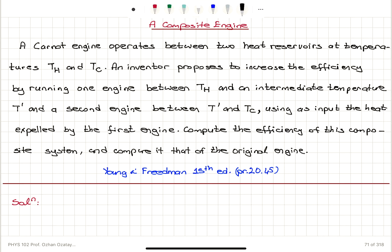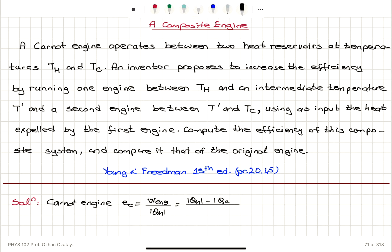Now remember that for a Carnot heat engine, the efficiency of the Carnot engine is the work done by the engine W_engine divided by heat provided to the engine QH. Since the internal energy of the cycle does not change, W_engine is QH minus QC divided by QH. This is 1 minus QC divided by QH, which is 1 minus Tc over Th.